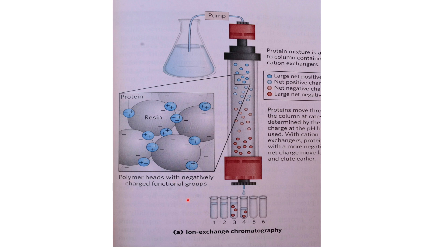In ion exchange chromatography, if the resin is negatively charged it is a cation exchanger. A protein with positive charges has an ionic interaction with the resin and is retarded, relative to less positively charged proteins which elute quickly. You can use 280 nanometer spectroscopy to locate your protein and then perform assays to confirm the protein of interest. It's often a trial-and-error process that requires repeated runs to get the desired results.